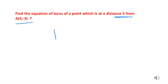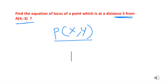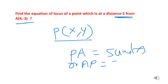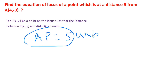We take a point P(x, y) on the locus such that the distance between P and A is 5 units, so PA = 5. We will write AP = 5 units and find the distance between two points using the distance formula, which is the square root of (x1 - x2)² + (y1 - y2)².